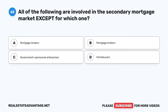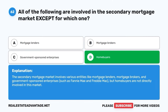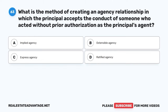Question 62. All of the following are involved in the secondary mortgage market except for which one? A. Mortgage lenders. B. Mortgage brokers. C. Government-sponsored enterprises. D. Home buyers. The correct answer is D: Home buyers. The secondary mortgage market involves various entities like mortgage lenders, mortgage brokers, and government-sponsored enterprises such as Fannie Mae and Freddie Mac, but home buyers are not directly involved in this market.